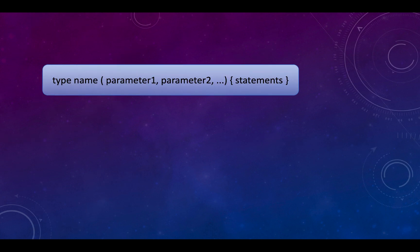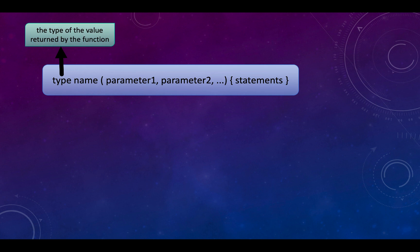A function usually looks like this: a type, a name, then a bunch of parameters which are the input values or variables to the function, then a bunch of statements which are everything you want to do with those parameters, and then a return value. The type defines the type of value that will be returned by the function — it could be integer, character, float, or any type we've already learned.